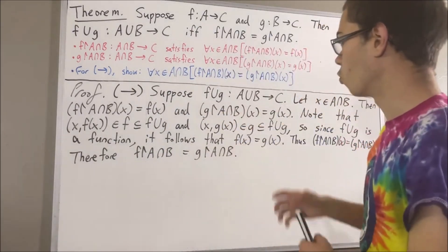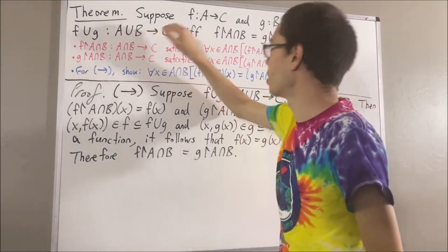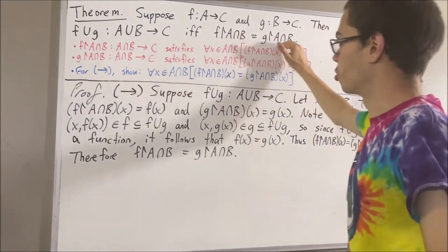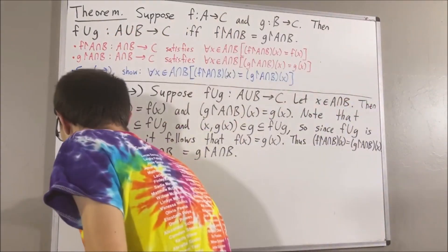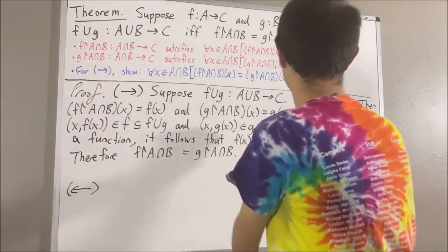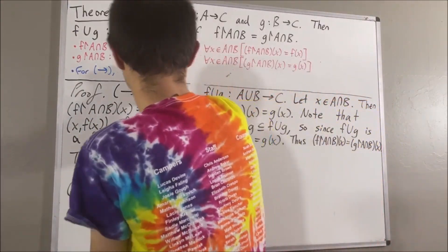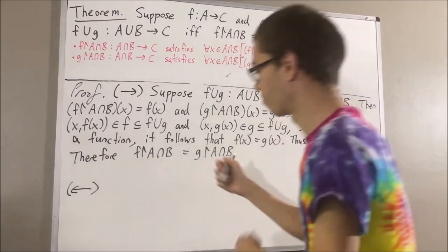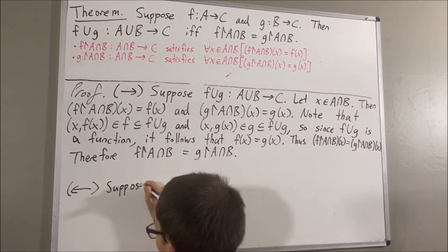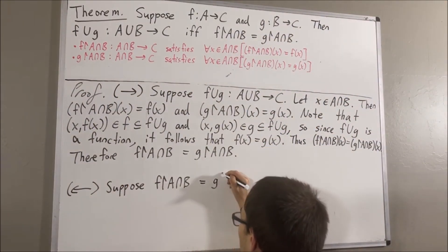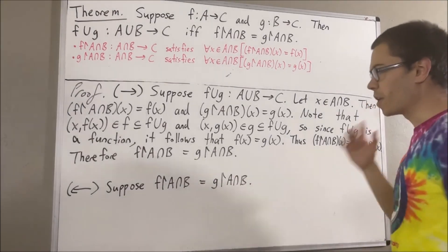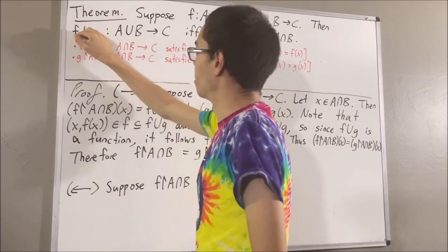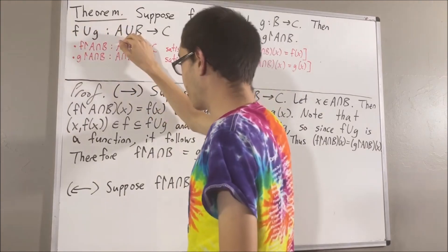So we have proven: if the union of f and g is a function from A∪B to C, then the restrictions of f and g to A∩B are equal. Now we're going to prove the other direction: suppose the restrictions are equal. The goal is to show that the union of f and g is a function from A∪B to C.